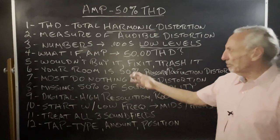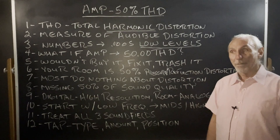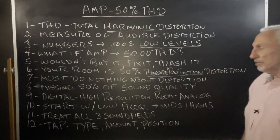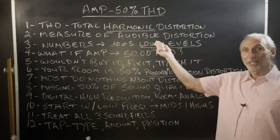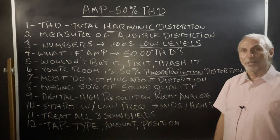But that's what you do to your room. Your room is 50% distortion — probably more, but let's just use 50%. What kind of distortion? Pressure and reflections. And nobody does anything about it. Nobody treats their room — very few. So if you relate it to a piece of gear, the distortion level in your room is a thousand times greater than any piece of audio gear you would ever get.